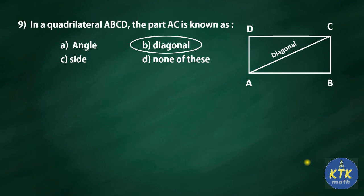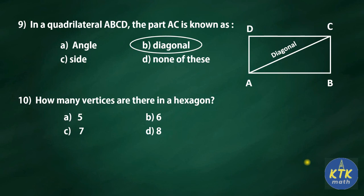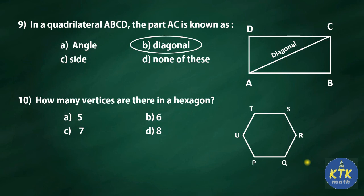Question ten: how many vertices are there in a hexagon? A hexagon is a six-sided polygon. Vertices are the corner points. Options are five, six, seven, or eight. If we label the vertices P, Q, R, S, T, U — there are six vertices. Therefore the answer for the tenth question is six.